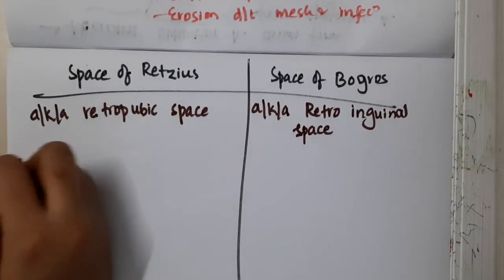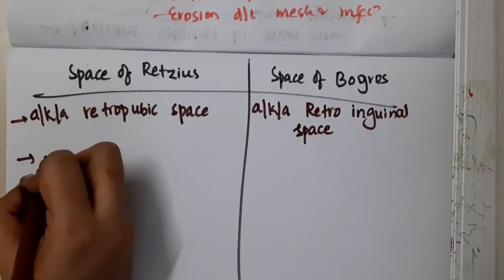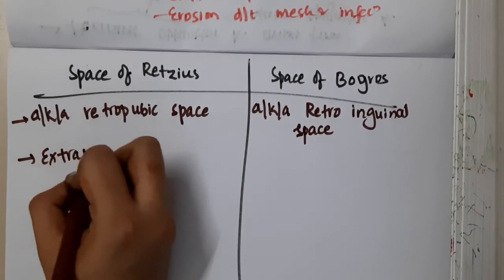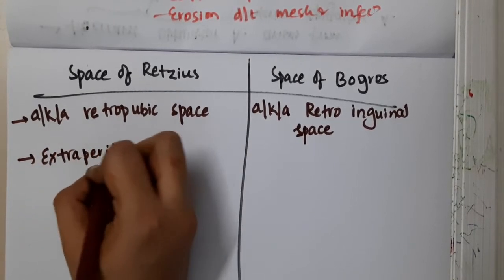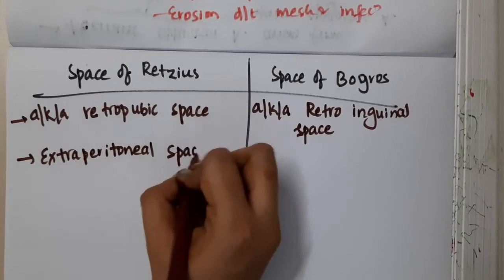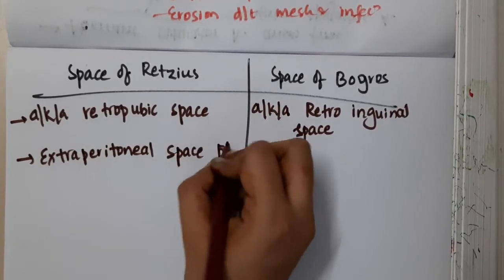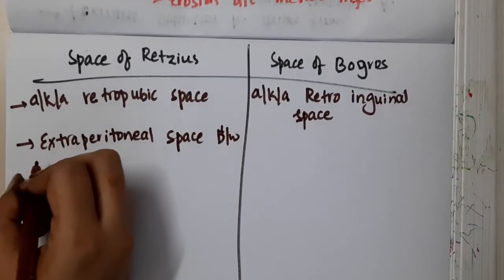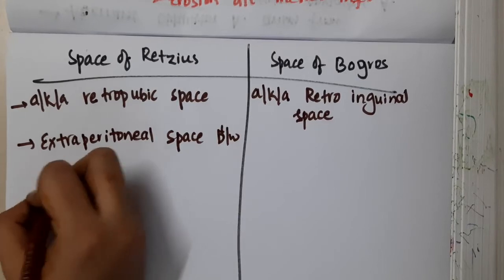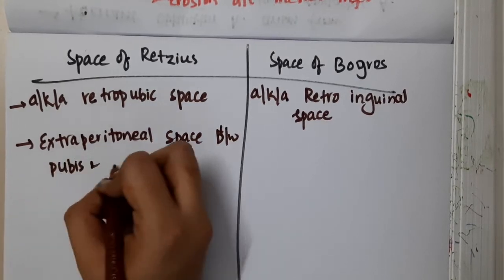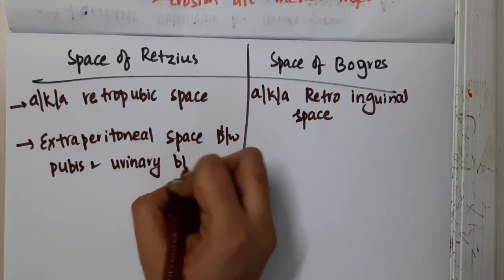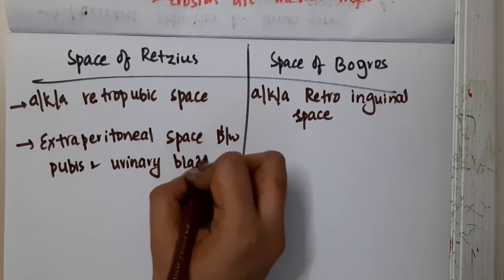The space of Redzius is present in the extra-peritoneal space, located between the pubis and the urinary bladder.